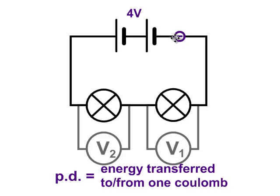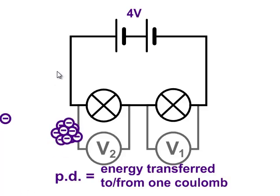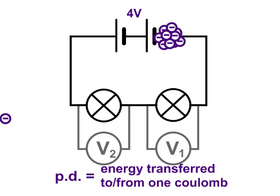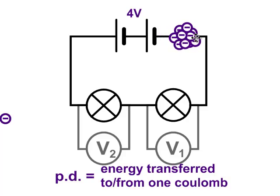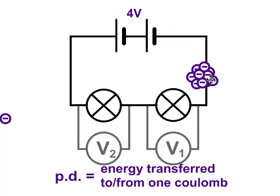A coulomb of charge isn't the same as one electron. A coulomb of charge is actually a whole load of electrons — millions of them. So we'll imagine a coulomb of charge flowing around this circuit.